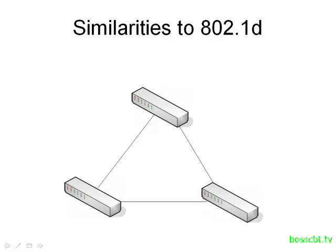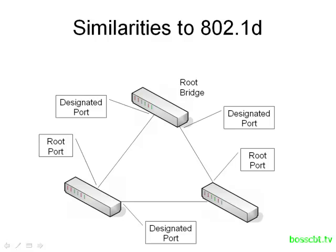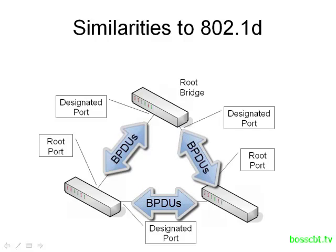Let's begin by looking at what is similar between Rapid Spanning Tree and the original Spanning Tree. First, we still use the concept of the root bridge, and we use the same methods to elect the root bridge. We also still use the concept of the root port on non-root switches, and we still use designated ports as well. We still use BPDUs, the Hello BPDUs, in order to enable all of these switches to communicate and share information.